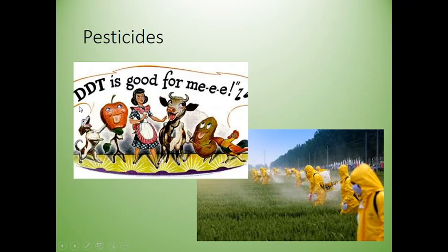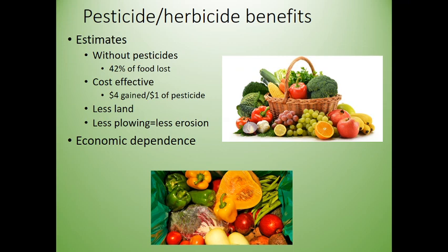There are good and bad things about pesticides — certainly not the old ad saying 'DDT is good for me.' On the good side: it's estimated that if we were to not use pesticides on a global scale, 40–42% of our food would be lost with current practices. If we suddenly stopped using pesticides, we would have a world food problem.